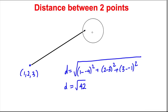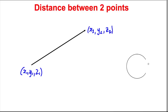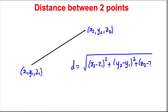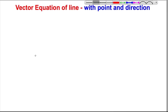In general, if we have points (x₁, y₁, z₁) and (x₂, y₂, z₂), the distance between them is the square root of (x₂−x₁)² + (y₂−y₁)² + (z₂−z₁)². It's essentially Pythagoras in three dimensions.